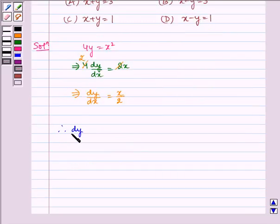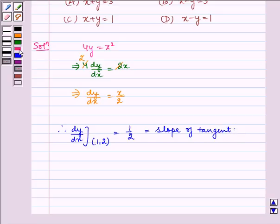Therefore dy by dx at point (1, 2) is equal to 1 by 2, which is equal to the slope of tangent. Therefore slope of normal is equal to minus 1 divided by 1 by 2, which is equal to minus 2.